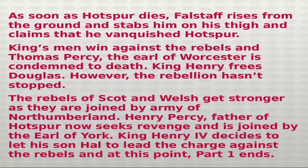Meanwhile, Falstaff is frightened and pretends to be dead on the battleground to avoid any fight. Hal defeats Hotspur and kills him. As soon as Hotspur dies, Falstaff rises from the ground, stabs him in the thigh, and claims he vanquished Hotspur. The King's men win against the rebels and Thomas Percy, the Earl of Worcester, is condemned to death. King Henry frees Douglas. However, the rebellion hasn't stopped — the Scottish and Welsh rebels grow stronger, joined by the army of Northumberland. Henry Percy, father of Hotspur, now seeks revenge and is joined by the Earl of York. King Henry IV decides to let his son John lead the charge against the rebels, and at this point Part 1 ends.